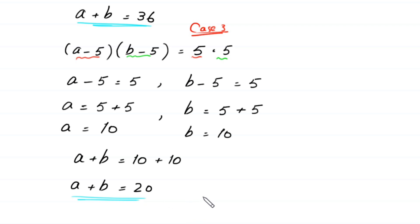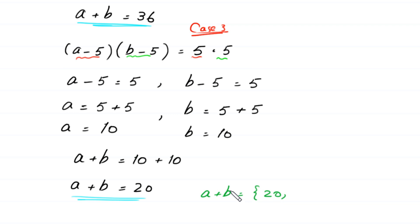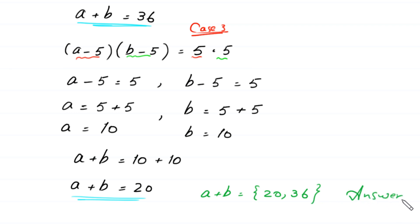Finally, the set of all possible values of a plus b is equal to 20 and 36. This is the final answer.